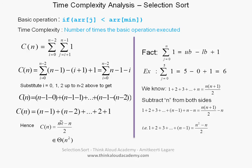The highest power in this equation is n squared, so the complexity of the algorithm is theta of n squared. As mentioned, since the complexity is of the order of n squared, selection sort works well only when the number of elements is small. If you have more elements to be sorted, the complexity of the algorithm becomes higher. This was the selection sort algorithm — thanks for watching.